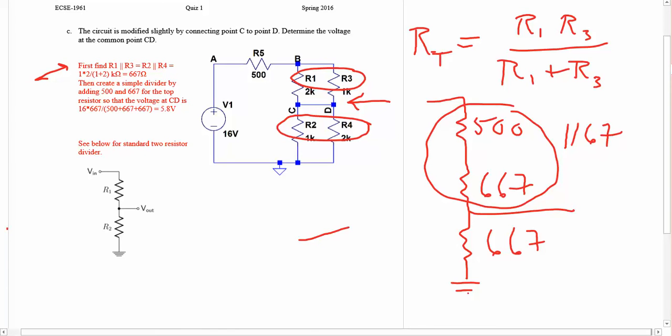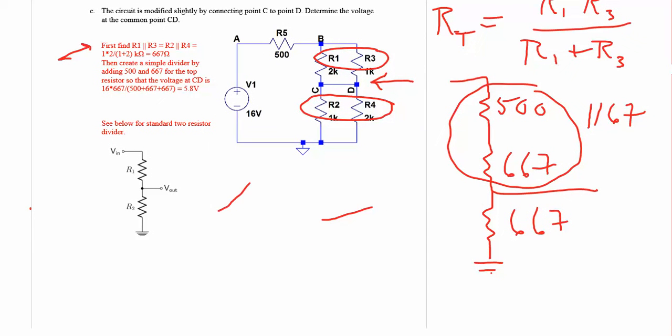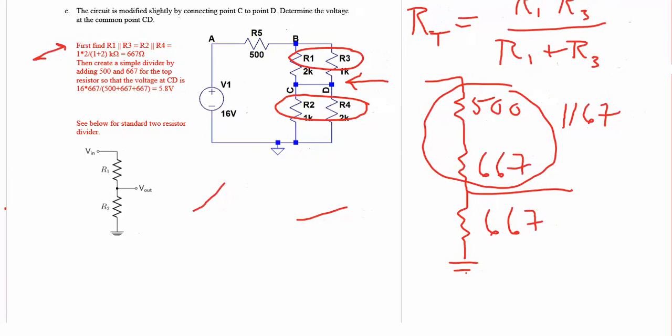And so the voltage right here will be 667 divided by 667 plus 1167 times the voltage in, which is 16 volts.